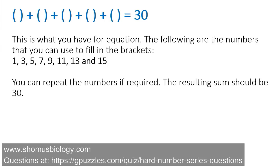Now let's move to the next one. You have an equation with five separate brackets where you need to place values. The available numbers are: 1, 3, 5, 7, 9, 11, 13, and 15. This is a really tough number series problem. One important thing to know upfront: no matter which single numbers you put in, you won't reach 30 easily. You need to construct values inside the brackets using more than one number — typically two numbers combined using addition or subtraction.